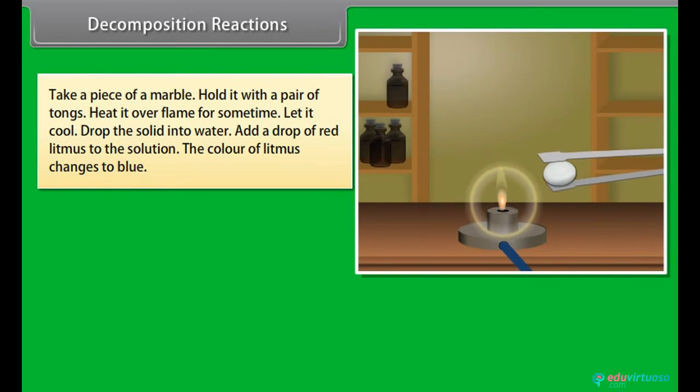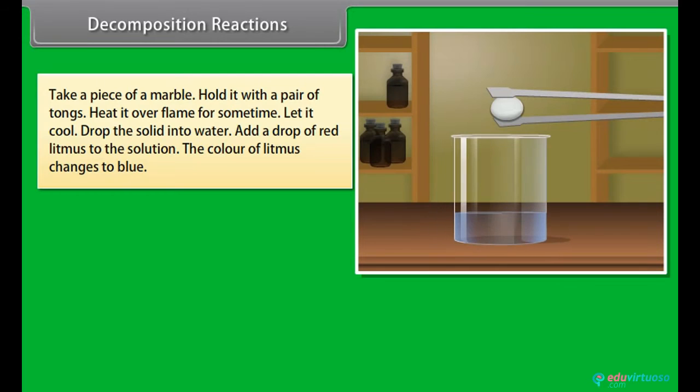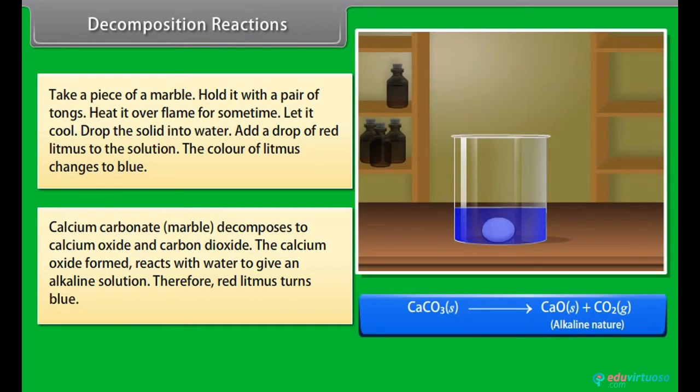Take a piece of marble, hold it with a pair of tongs, heat it over flame for some time. Now let it cool. Drop the solid into water and add a drop of red litmus to the solution. The colour of litmus changes to blue. Calcium carbonate (marble) decomposes to calcium oxide and carbon dioxide. The calcium oxide formed reacts with water to give an alkaline solution. Therefore, red litmus turns blue.